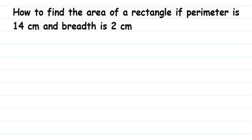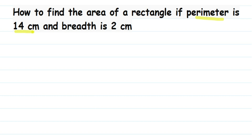Hello everyone, here's a question on rectangles asked by Kishore. The question is: how to find the area of a rectangle if the perimeter is 14 centimeters and the breadth is 2 centimeters. So they have given two things — the perimeter which is 14 centimeters and the breadth which is 2 centimeters.